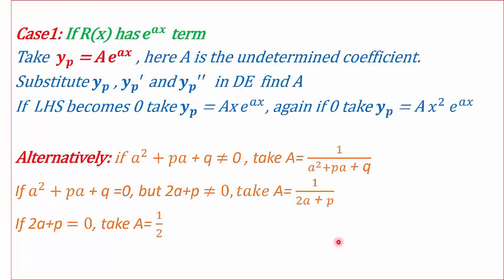As r(x) is a function of x, we get different cases. Let's look at the first case. If r(x) has terms like e^(ax), then we assume our yp to be capital A times e^(ax), where capital A is the undetermined coefficient. We differentiate yp, substitute yp and its derivatives in the differential equation, compare the coefficients, and find the undetermined coefficient A.